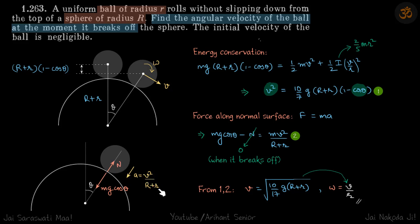So its acceleration in this direction is v²/(R+r). So when we write the forces in this direction, this is what we get: mg cos θ - N = ma, that is mv²/(R+r).